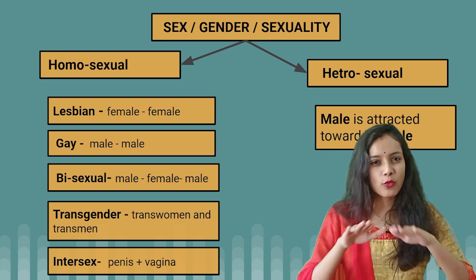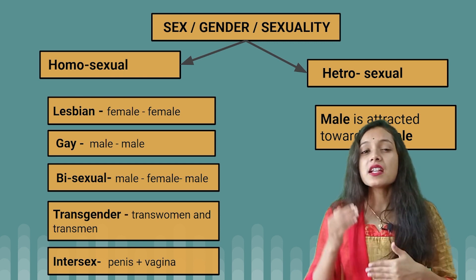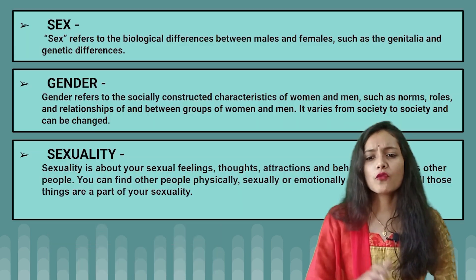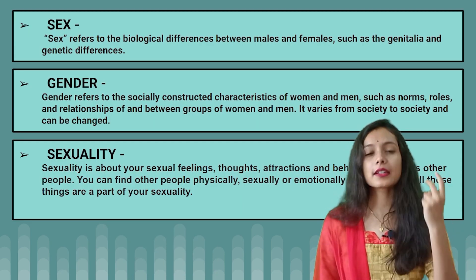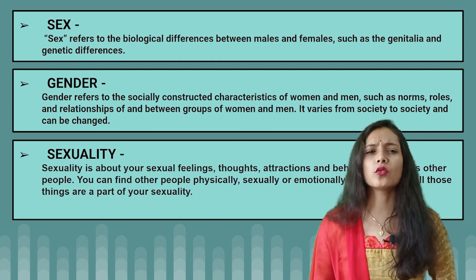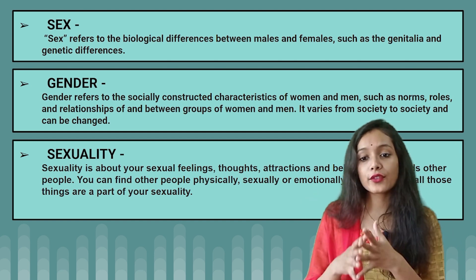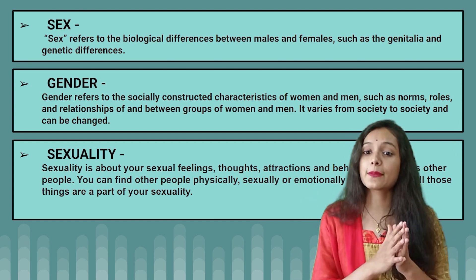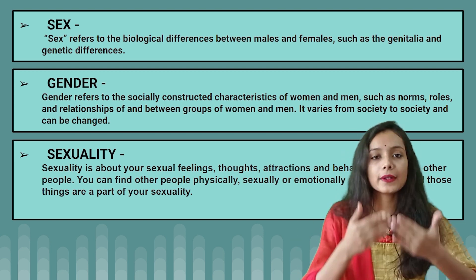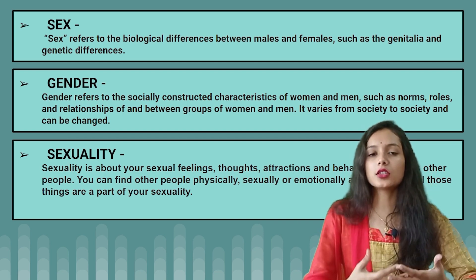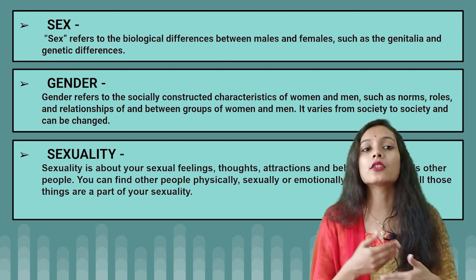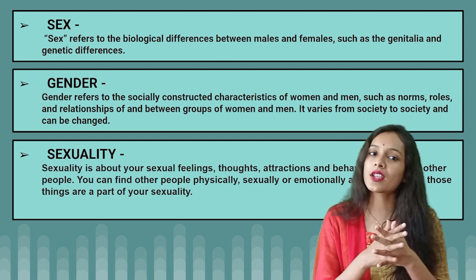Now, we have to understand three things: sex, gender, and sexuality. These three things are different. Sex refers to the biological difference between males and females, such as genitalia. It means that at birth, when the doctor tells you it is a baby girl or a baby boy — that is sex.